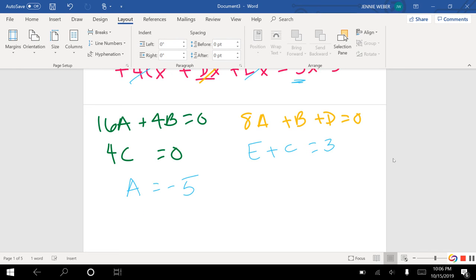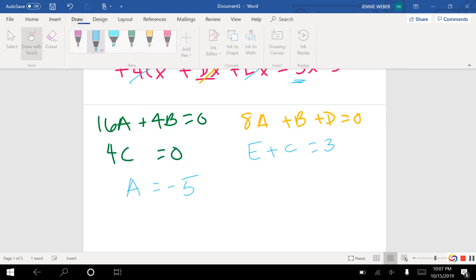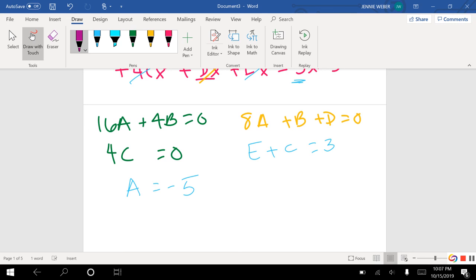So this is my system. I am looking for A, B, C, D, E, five variables. I have five equations. That is necessary. If you didn't have enough, we would have done something wrong. So I know what A is.